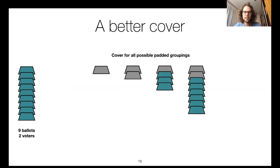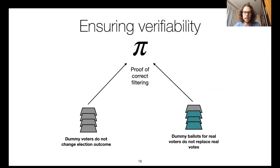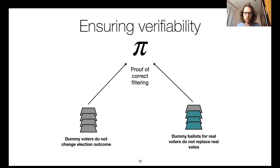You might ask whether these dummies allow the tally server to influence the election result. It turns out that is not the case. When there is a dummy voter — a voter that only casts dummy ballots — the tally server proves that the final selected ciphertext does not influence the election result. Moreover, when dummy ballots are added to a real voter's group, they are added in such a way that they can never replace a real ballot.